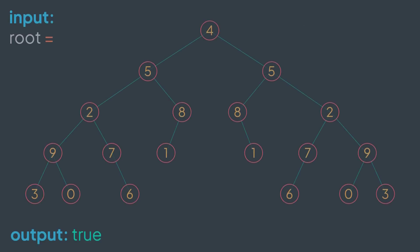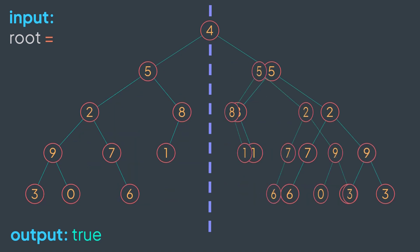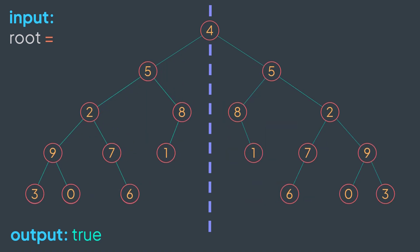For example, this tree is symmetric because if we take its left part, we reverse it, we get its right part. And vice versa, if we take its right part, we reverse it, we get its left part.